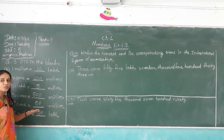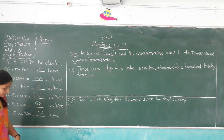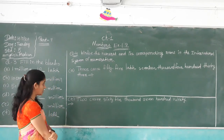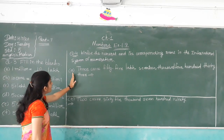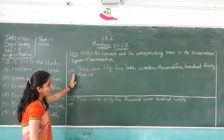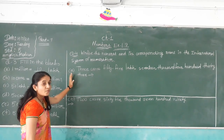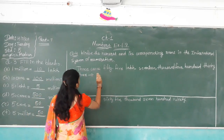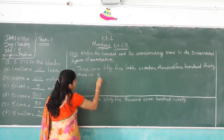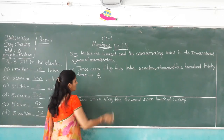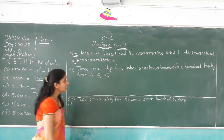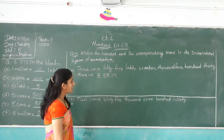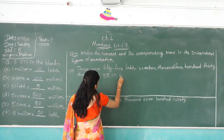And 5 million is equal to 50 lakh. Now the next question: write the numeral and its number name in the international system of numeration. First read the number name: 3 crore 55 lakh 17 thousand 433. First, write the numeral in the Indian system: 3 crore means 3, then 55 lakh, then 17 thousand, then 433.